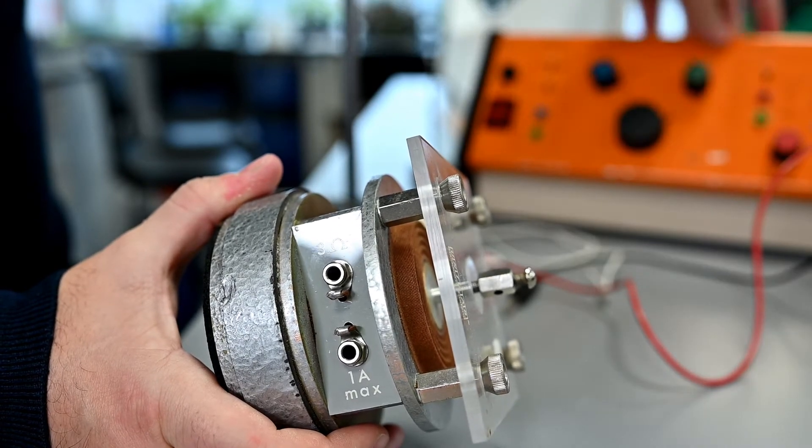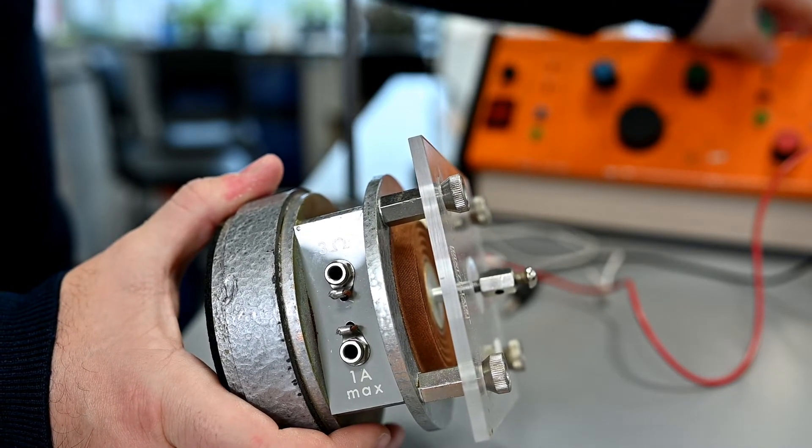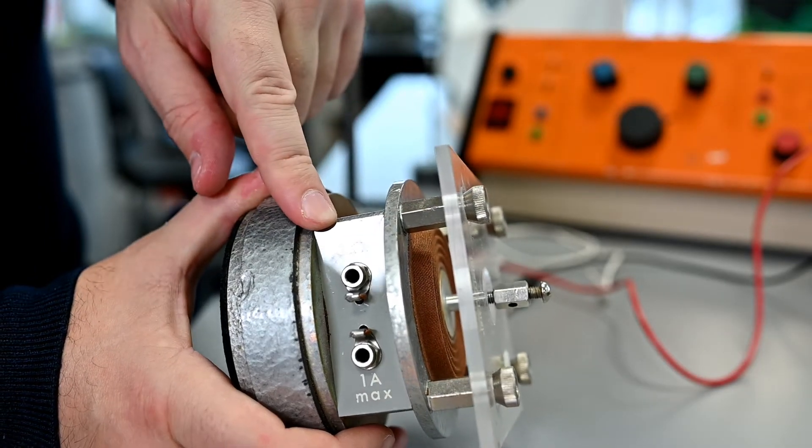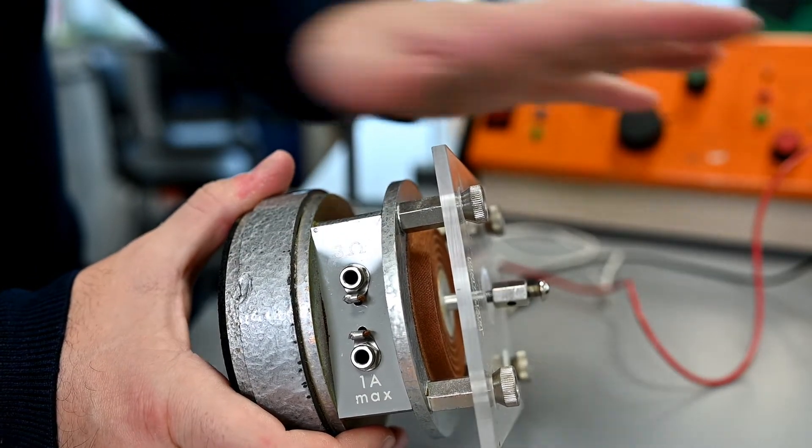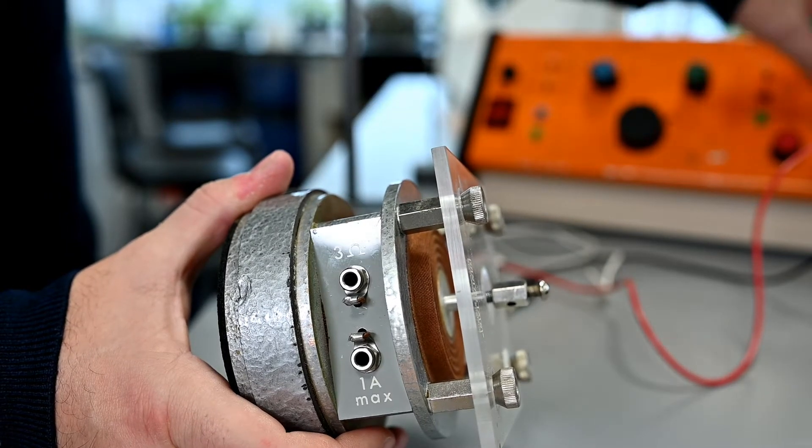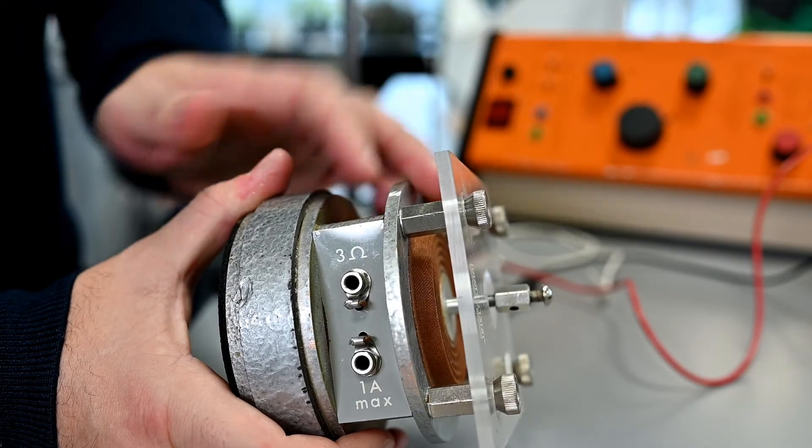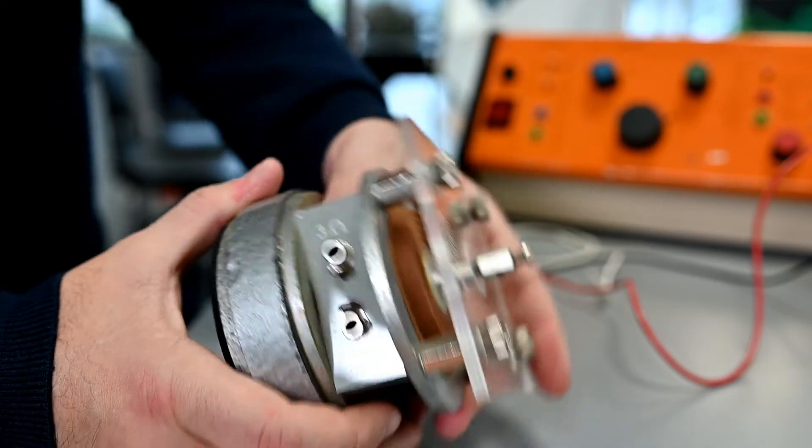Now the output impedance of these orange Unilab signal generators is about one ohm on the low setting, and this is three ohms input, so one and three match reasonably well. If you were to use the high output of the signal generator, it would be a hundred ohms, and that doesn't match three very well. So what you would find is that this didn't vibrate very much.